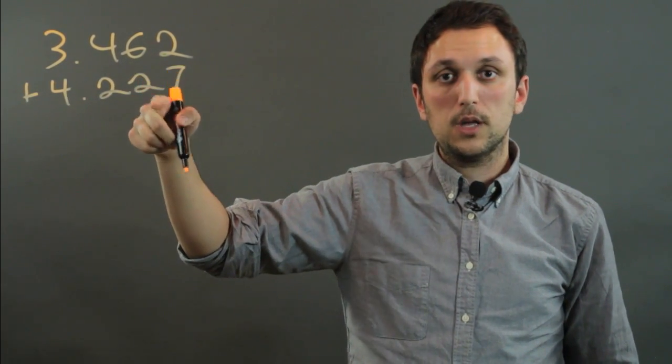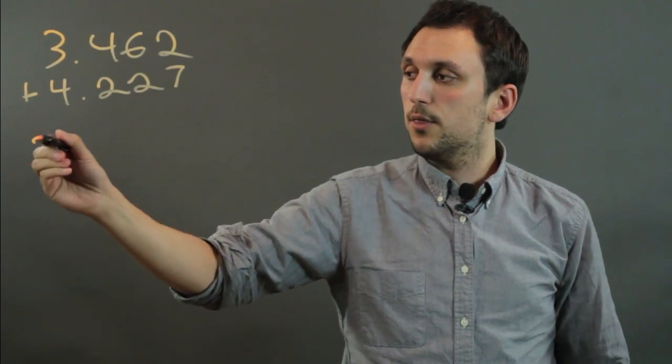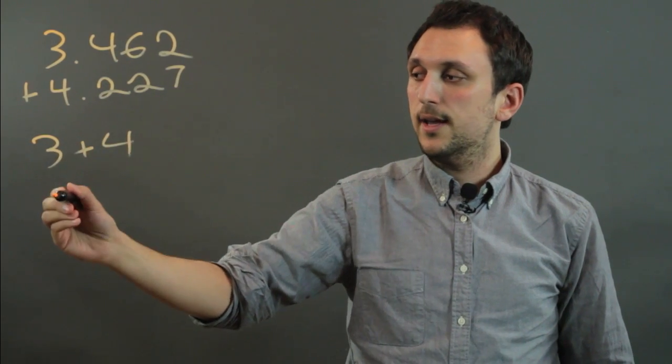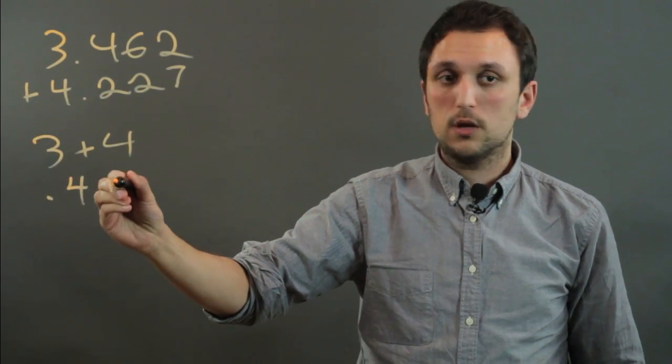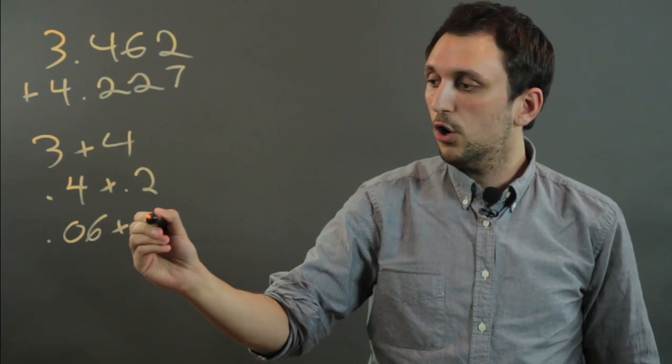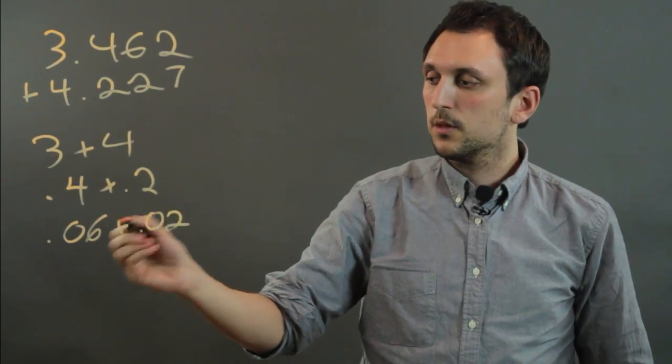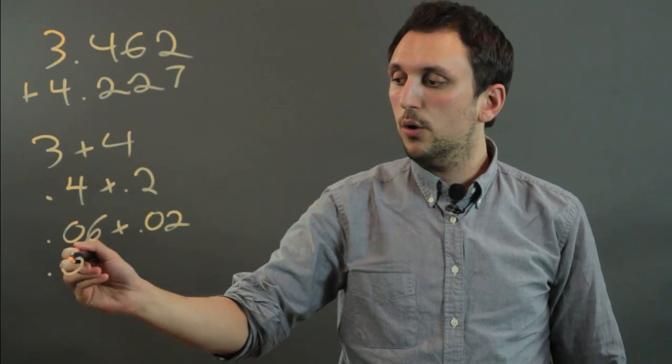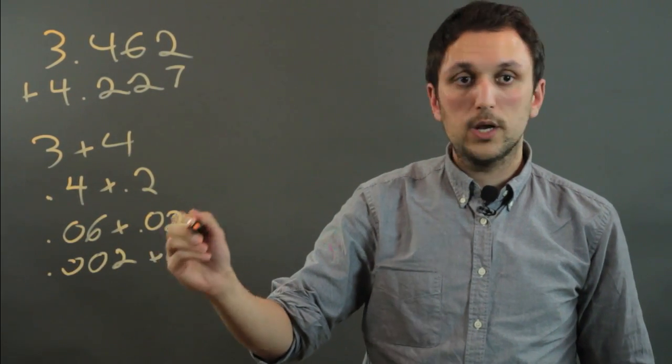the way we would sum it up doing partial sums would be to say 3 plus 4, and then 0.4 plus 0.2, and then 0.06 plus 0.02, and then 0.002 plus 0.007.